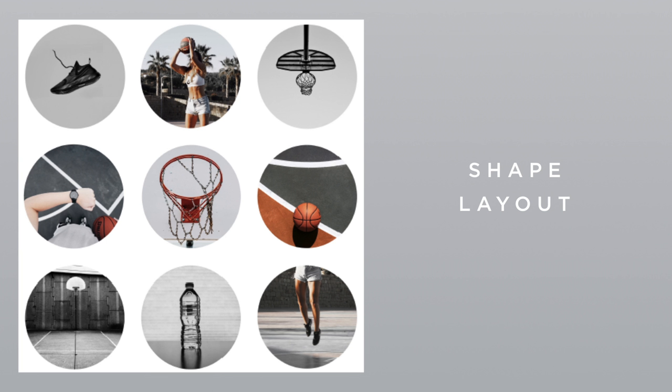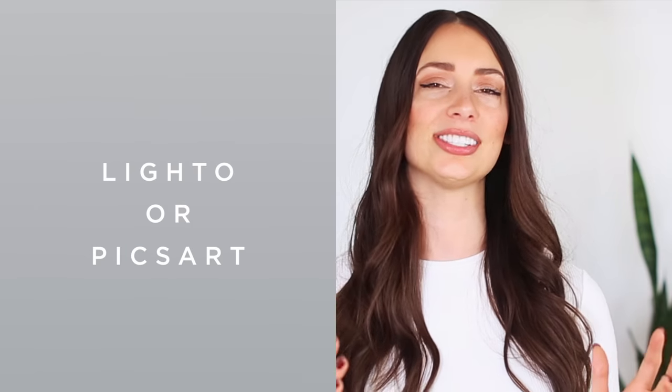The next layout idea I want to share with you is the shape layout. To do this memorable feed, pick a shape that aligns with your brand's aesthetic. So this feed is basketball-themed, so it's only fitting that the shape picked here is a circle like a basketball. Once you've picked a shape that aligns with your brand, use one of the apps I've linked below — like Lido or PixArt — that will help you cut your photo into your desired shape before posting. I typically recommend keeping a white background for this Instagram theme, but if you have an on-brand reason to do otherwise, then go for it.